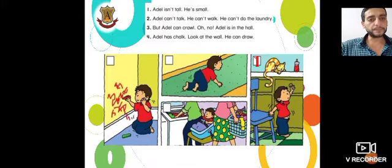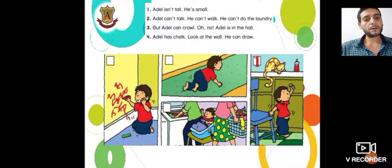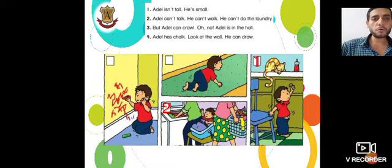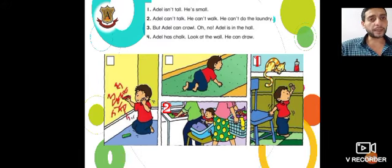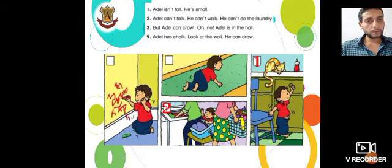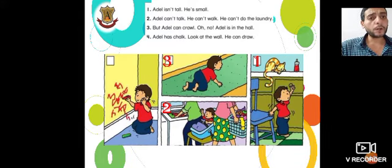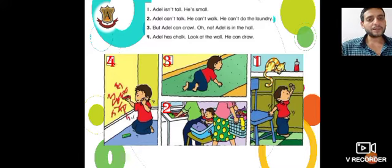Picture number two. Sentence three: Adel can crawl. Oh no, Adel is in the hole. Which one of them? Picture number three. Sentence four: Adel has a shawl. Look at the wall, he can draw. The last picture — number four.